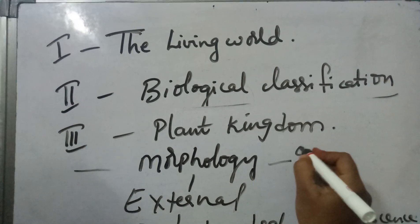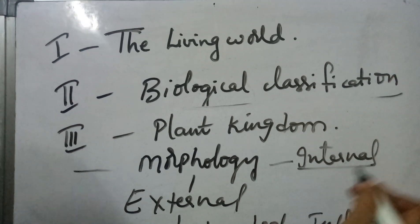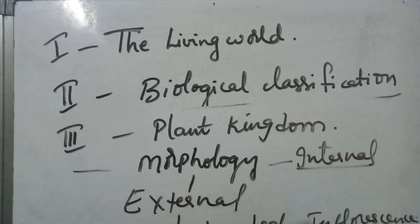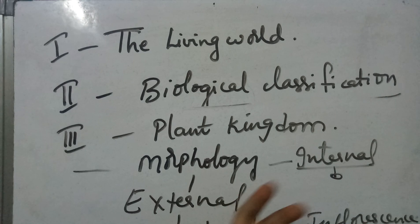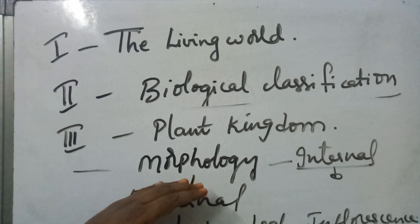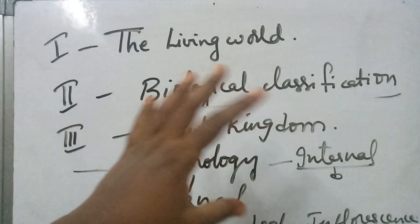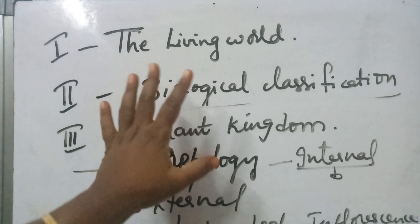In internal morphology — which is anatomy — we discuss tissues and internal structures. After morphology, we go for embryology, which covers reproduction in plants: asexual and sexual reproduction. In between, we also have anatomy and cell biology. These are the different topics we will cover in the first year syllabus.